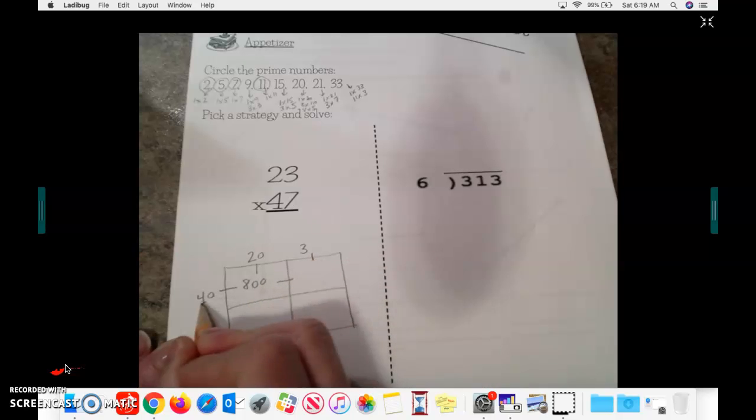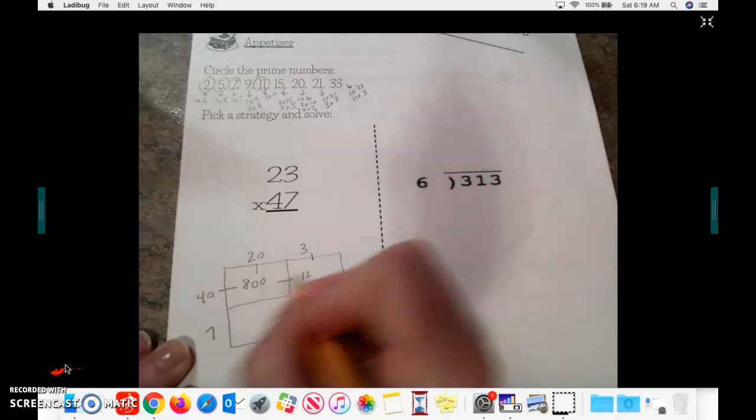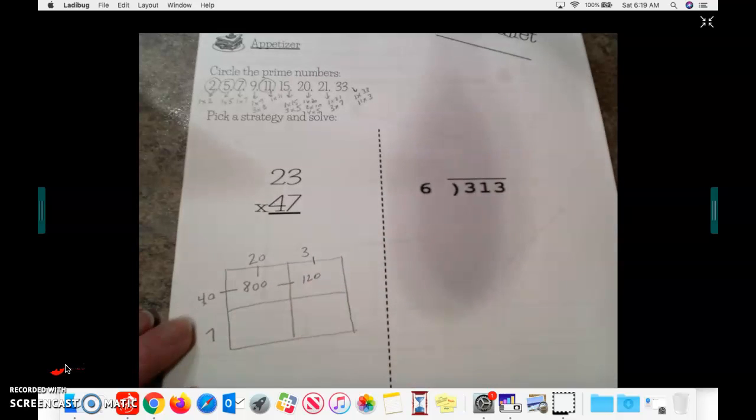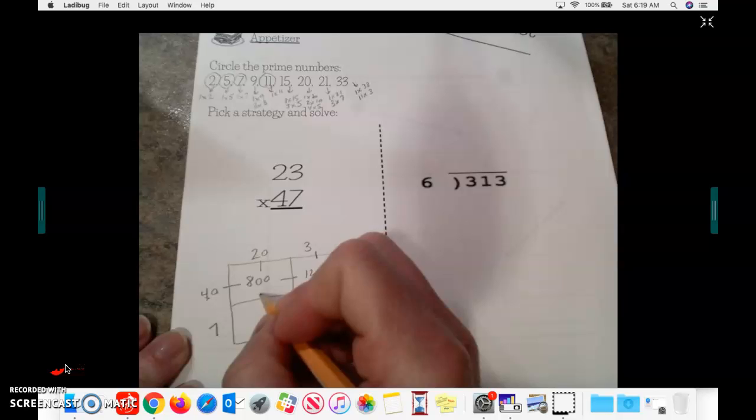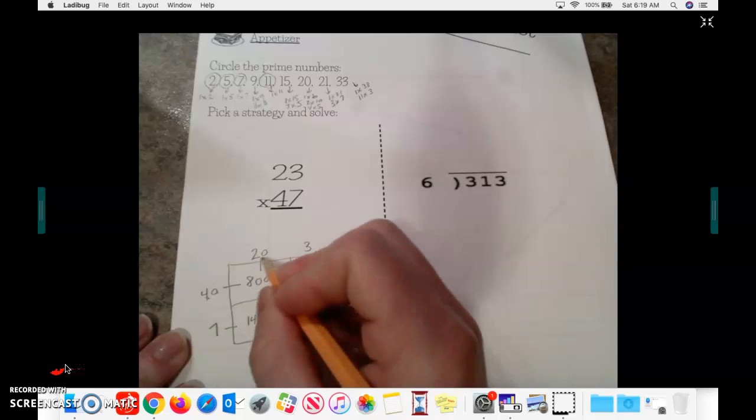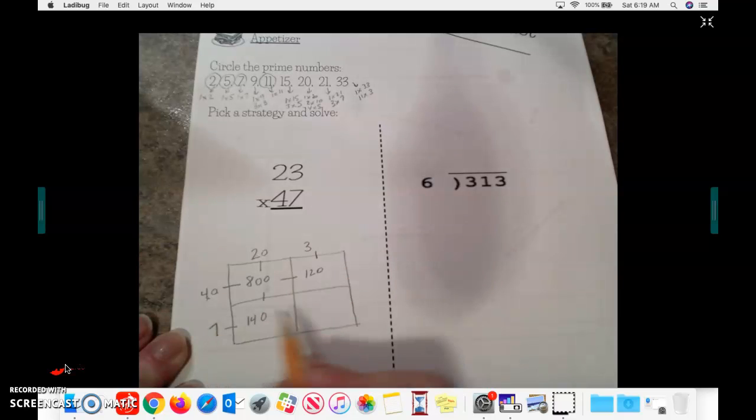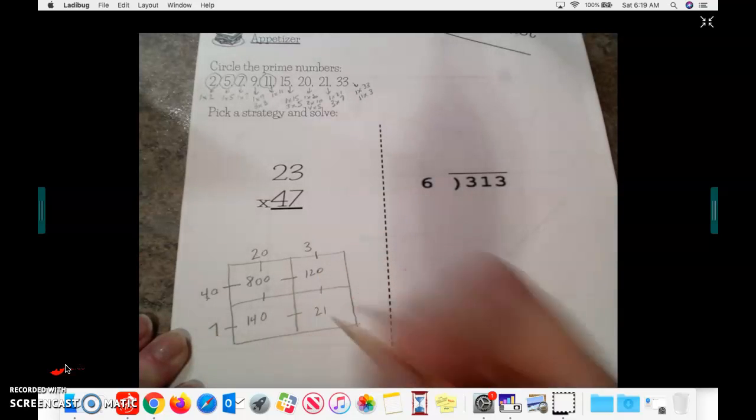40 times 3. 4 times 3 is 12. And I add 1, 0. Then I'm going to move down here to 20 times 7. 2 times 7 is 14. 1, 0. 7 times 3 is 21.